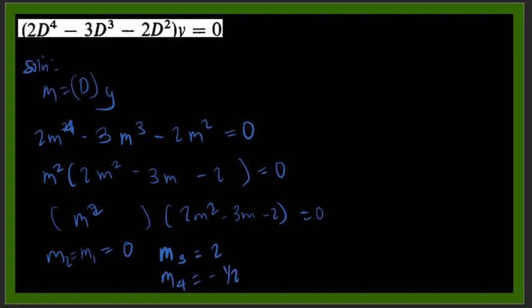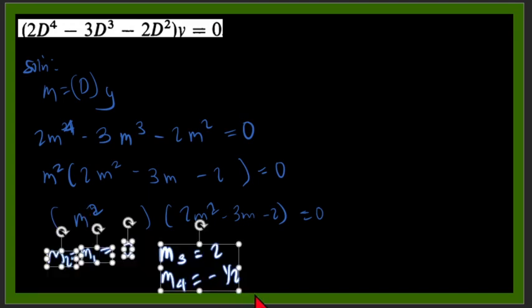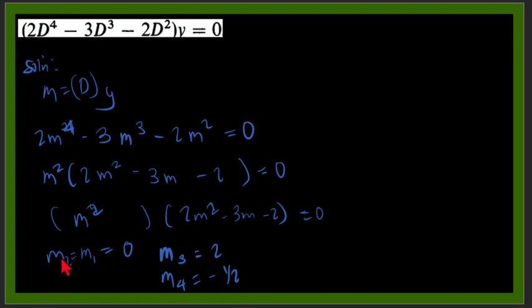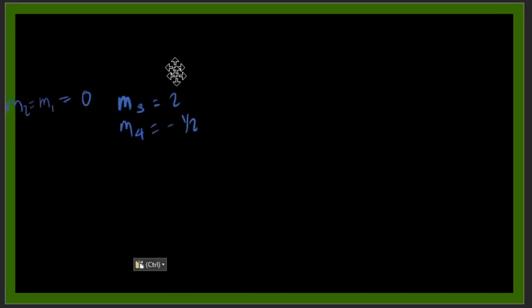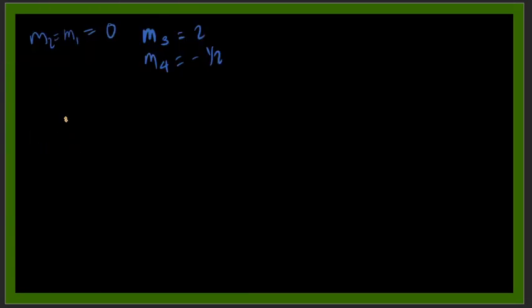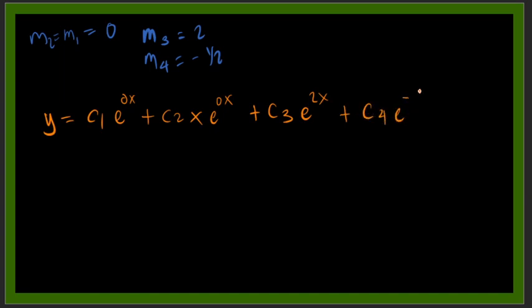Maybe we could copy this one, so that going to the next slide we could have this as our reference in getting the general solution. So we have now y is equal to... we have repeated roots here, so this will be C1 e to the 0x plus C2 x e to the 0x, then 2 distinct, so we have plus C3 e to the 2x plus C4 e to the negative 1 half x, or x over 2.